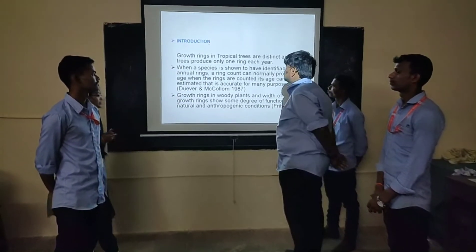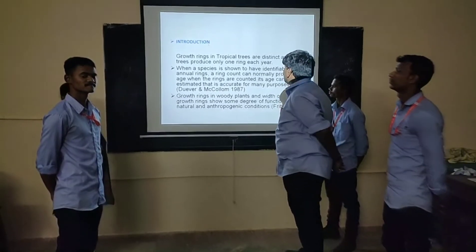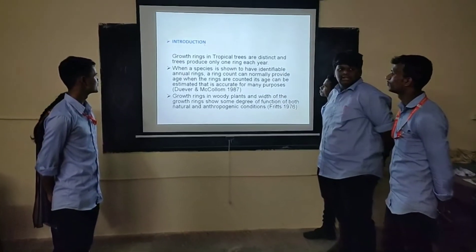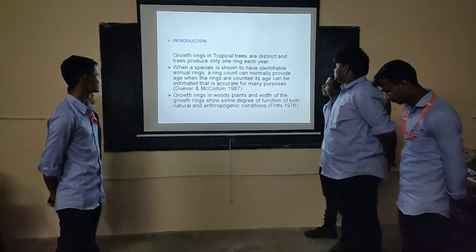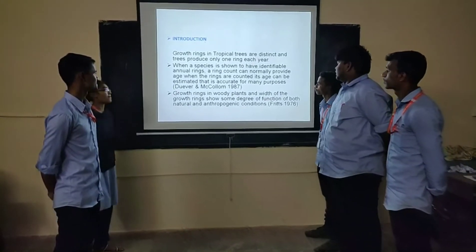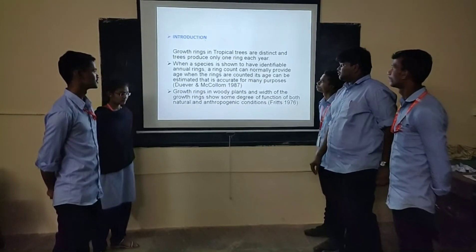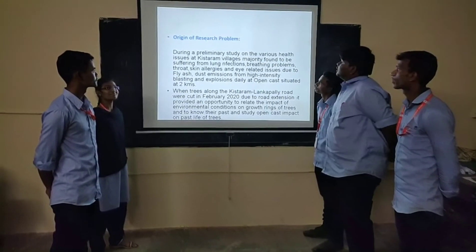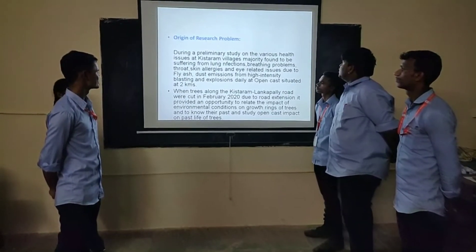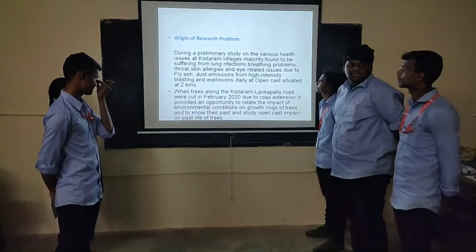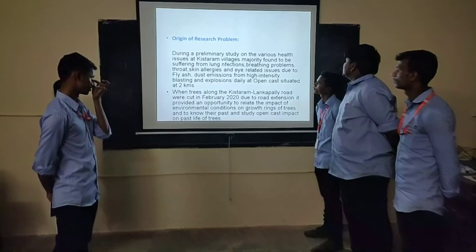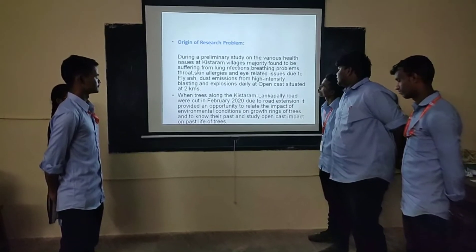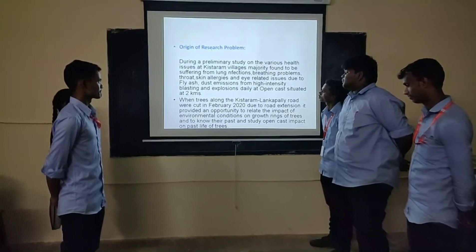The growth of tropical trees: trees form only one ring per year, and by counting them we can normally estimate the age of trees. In 1987, growth of this example showed some degrees of growth by accident and under burning conditions. This is a large area of research and a problem due to environmental studies and various health issues. Study areas have breathing effects and lung effects, and they have respiratory infections. They are located near two kilometers and have been studied for the open cast and past effects on trees.